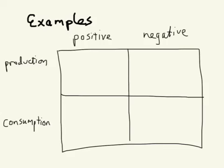There are all sorts of positive and negative externalities, and I just want to give you a few examples and encourage you to think of your own. I've created a grid here — create a similar one in your notes and think of some examples. Once you get going, there are just a zillion of them.